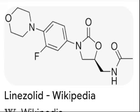Mechanism of action: Linezolid is the first approved oxazolidinone to inhibit bacterial protein synthesis by interfering with translation. Linezolid attaches to a site on the bacterial 23S ribosomal RNA in the 50S subunit, preventing the formation of a functional 70S initiation complex. This activity essentially inhibits protein production and prevents bacteria from multiplying.